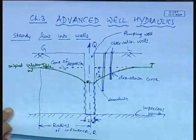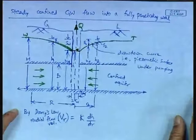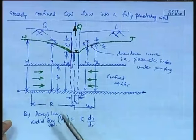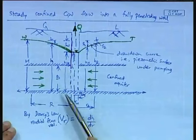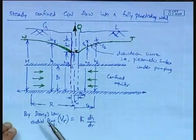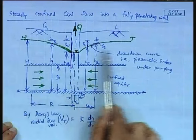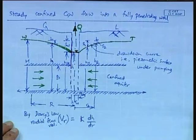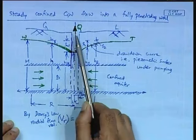Welcome to lecture number 12, in which we will continue with our previous lectures on steady flow through wells. In lecture number 11, we discussed the steady flow through a confined aquifer into a well, where the confined aquifer thickness was B and the well was fully penetrating the entire thickness of the confined aquifer. The water table was horizontal before pumping began, resulting in a steady discharge Q from the well.